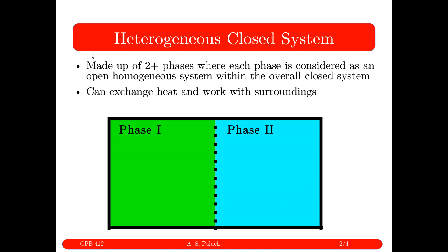We're going to start out with a picture of a heterogeneous closed system. My system is heterogeneous in that if I were to take a sample at random from within my system — where I'm defining my system with this solid black line — the properties are not going to be the same throughout. So if I were to take a sample from phase 2 and a sample from phase 1, the properties of that sample from phase 1 are not going to be equal to the properties from phase 2. It's closed in that mass can't cross my system boundary, but my system can exchange heat and work with my surroundings.